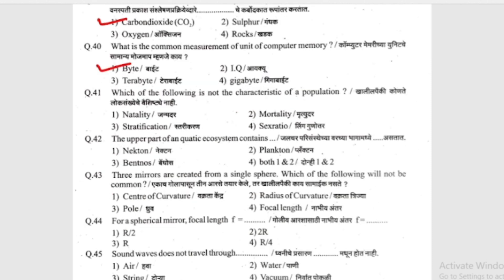Which of the following is not a characteristic of population? (Khaalil pe ki konte loksankhe che vishishte nahi?) Options: birth rate (janmadar), death rate (mhrityudar), stratification (shtarikaran), or sex ratio (lingwa gununtar). The answer is stratification — it is not a characteristic of population.